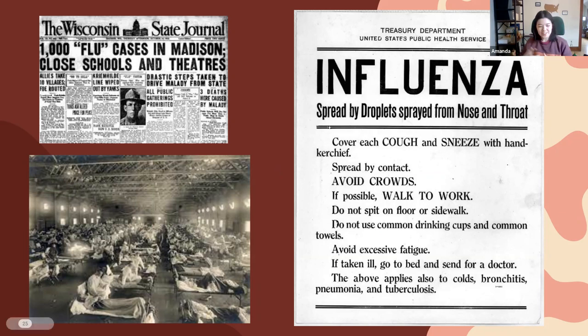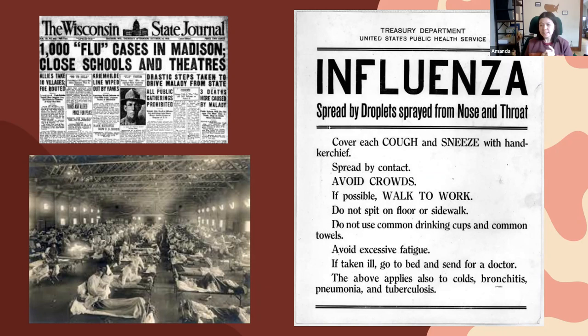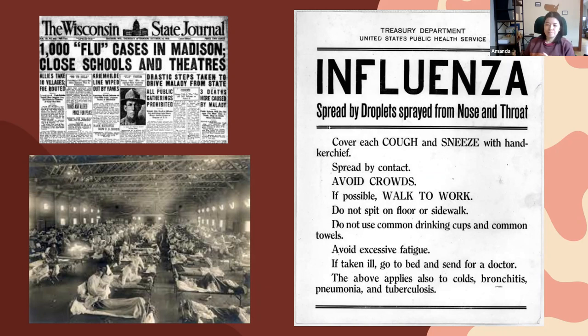The Spanish flu is a misnomer. The earliest cases were reported in Kansas, and it's really unclear, even based on more recent research, where the virus originated. Because this pandemic occurred during World War One, many countries were censoring bad news to keep morale high. Spain was a neutral country and reported freely on the outbreak, which created a false impression that Spain was the epicenter. It's better to call it the 1918 H1N1 pandemic or the Great Influenza.